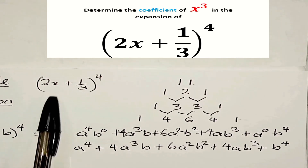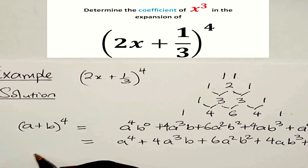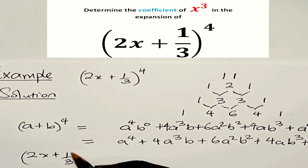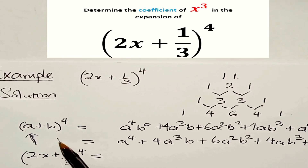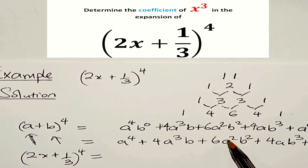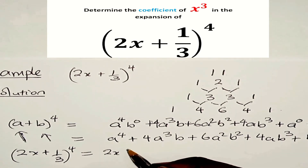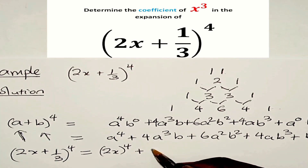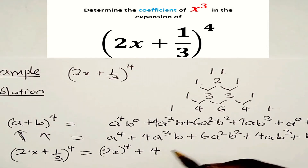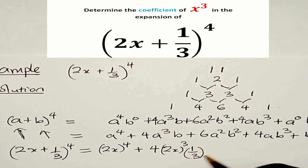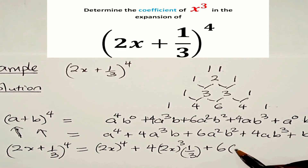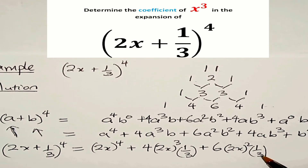Now we are going to use this formula to expand the binomial 2x plus 1 over 3, to the power of 4. We take 2x to be a and 1 over 3 to be b, then substitute into the formula. So we have 2x to the power of 4, plus 4 times 2x to the power of 3 times 1 over 3, plus 6 times 2x squared times 1 over 3, and so on.